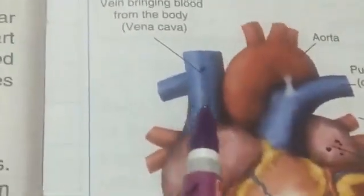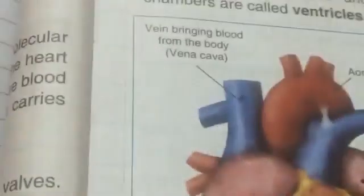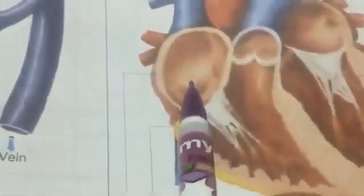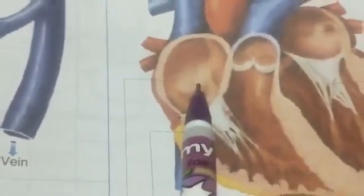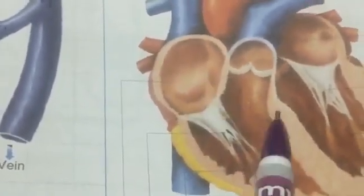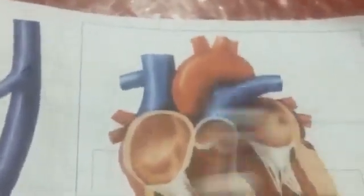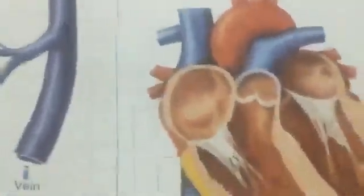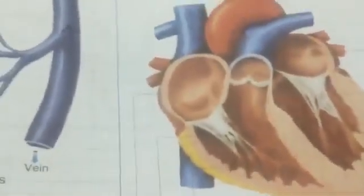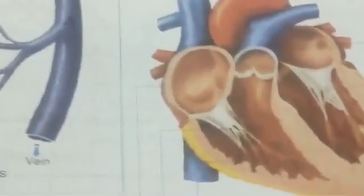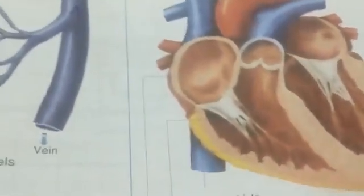The veins bring the blood from the body to the heart. From the heart, the blood is pumped to the lungs, where it is purified again. This process of blood circulation continues throughout the life of an individual.